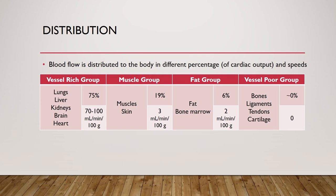The distribution of drugs is dependent on blood flow throughout the body. The cardiac output distributes mostly to the vessel-rich group (VRG), which consists of the lungs, liver, kidneys, brain, and heart. These organs receive 75% of cardiac output at approximately 70 to 100 mL per minute per 100 grams of tissue. The muscle group (muscle and skin) receives about 19% of cardiac output at 3 mL per minute per 100 grams. The fat group (fat and bone marrow) receives about 6% at approximately 2 mL per minute per 100 grams. Blood flow falls dramatically across these groups, with VRG organs receiving far more blood than any other compartment.